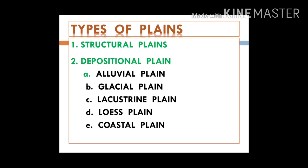Now we move to the types of plains. There are two major types: structural and depositional. Structural plains are mostly formed due to tectonic movements, whereas depositional plains are formed by different agents of deposition like fast-moving wind, rivers, ocean waves, and glaciers. These agents erode material and deposit it in low-lying areas, leading to the formation of different plains.